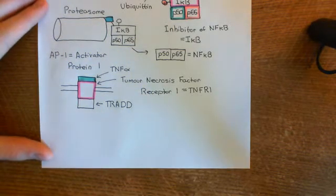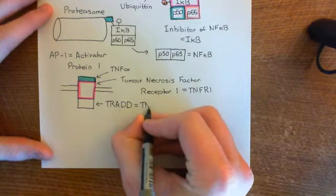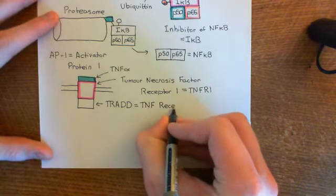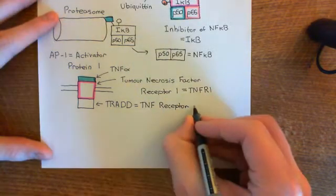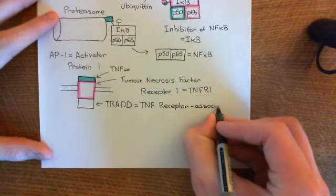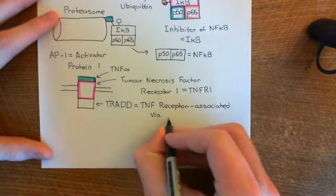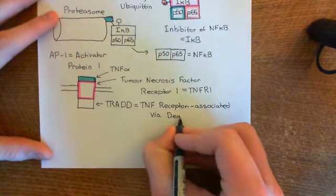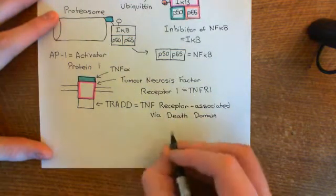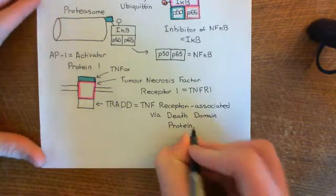TRADD stands for tumor necrosis factor receptor associated via death domain protein. So TNF covers the tumor necrosis factor receptor portion, A stands for associated, via doesn't get a symbol, and death domain gets the double D — giving us TRADD.